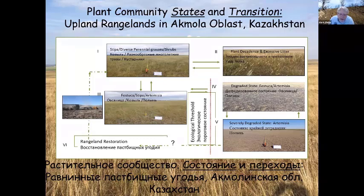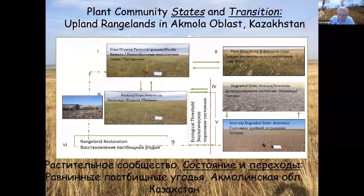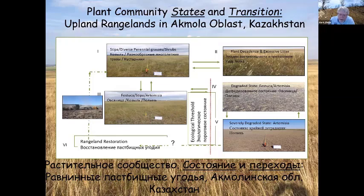With continued heavy grazing pressure, stipa disappears from the plant community. Festuca grass decreases in abundance and productivity, and Artemisia semi-shrub wormwood starts to increase. With continued severe overgrazing — state four — we end up in state five with a tremendous amount of bare ground. Almost all grass plants are removed from the ecosystem, leaving only Artemisia shrub and very few forbs.